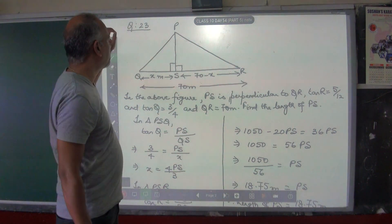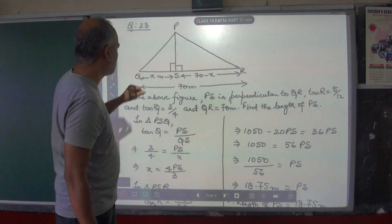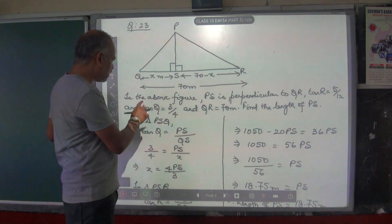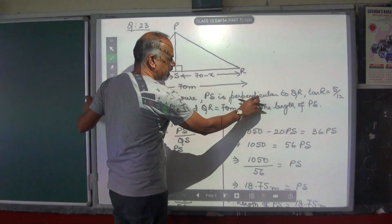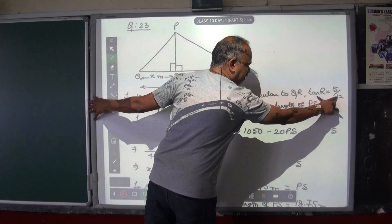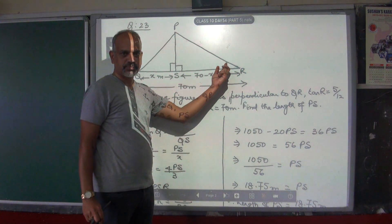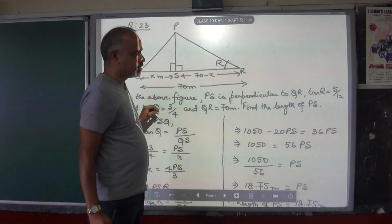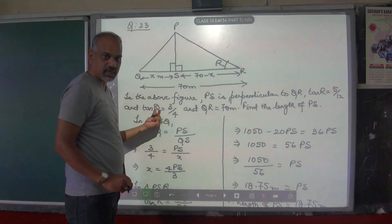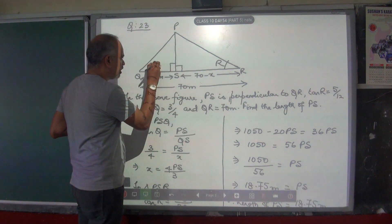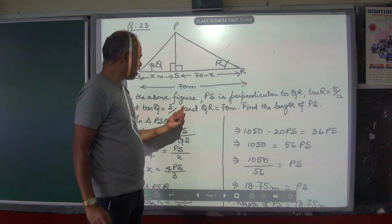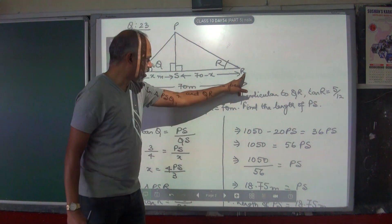Next is question 23. The diagram was already given in the question. PSQ is one right angle triangle and PSR is the other right angle triangle. In the above figure, PS is perpendicular to QR — that is why the angles here are 90 degrees. Tan R value is 5 by 12, where angle R is this angle. And tan Q, where angle Q is here, tan Q is equal to 3 by 4. And QR is equal to 70 meters — this whole length is 70 meters.